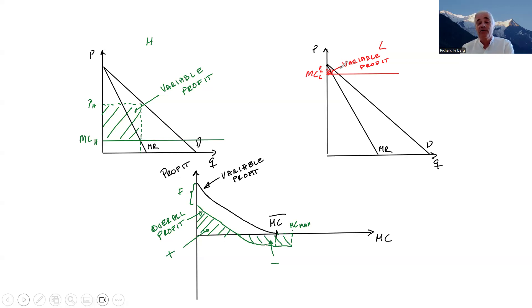And as long as your variable profits are positive, you keep on operating. So this is how we can think of monopolistic competition with heterogeneous firms.